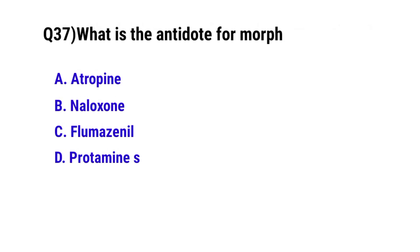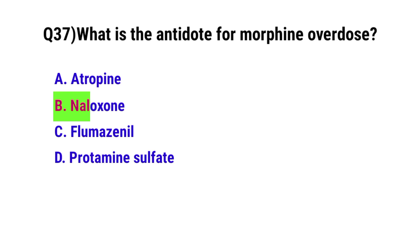Question number 37: What is the antidote for morphine overdose? The correct option is B: Naloxone.